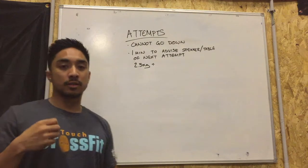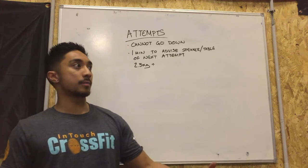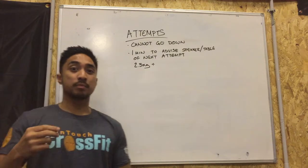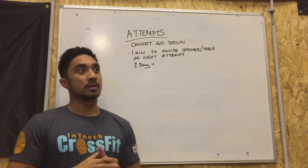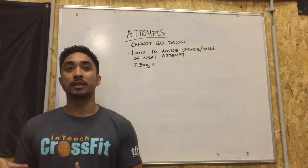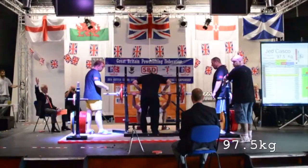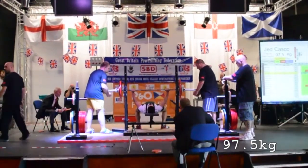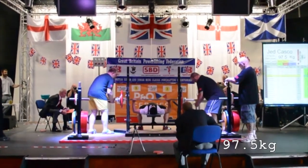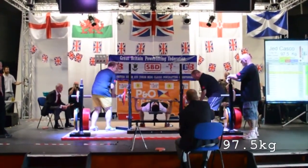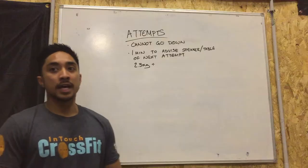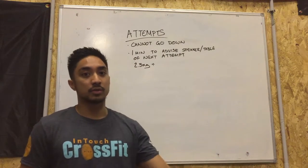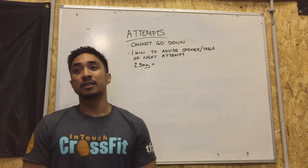With your attempts, once you've picked an opening weight and attempted it — say for example if I picked 100 kilos and I failed it — you cannot go down in weight. You then have to try to complete that same weight in attempt number two. For example, if you picked 80 kilos for the bench and it's a no lift or too heavy, you can't go to the tables and say you want to lift 75, because that's your opener — you've already attempted it, you can't go down a weight.